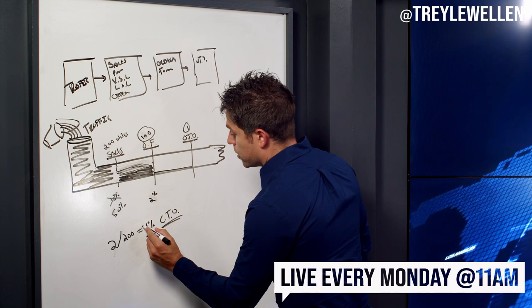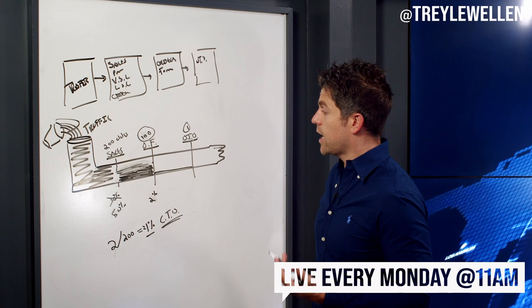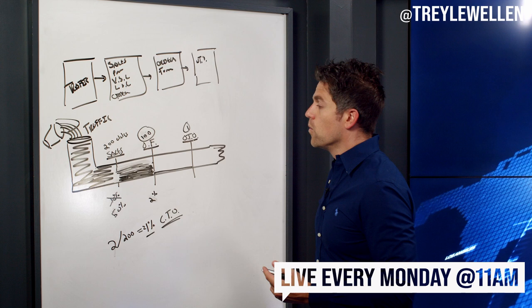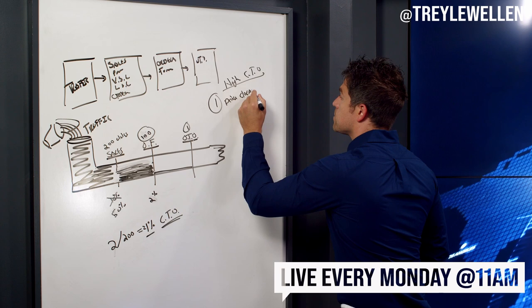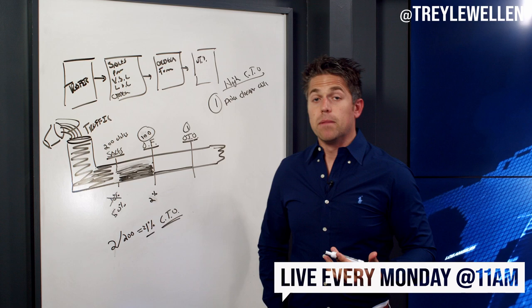Let's scale it up: 200 clicks, 50% conversion on the sales page gives us 100 order form views, converting at 2% gives us two sales. Two sales divided by 200 clicks equals a 1% click-to-order rate. That's what we're always looking for — you want to be above 1% click-to-order. To increase that rate, you can drive cheaper clicks through retargeting, or you can optimize your sales page to open that valve wider and send more traffic to the order form.